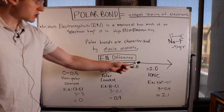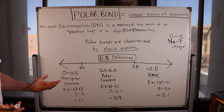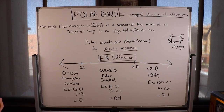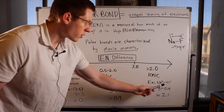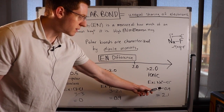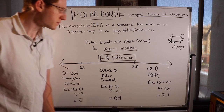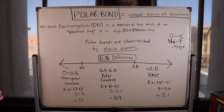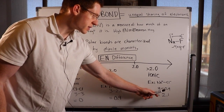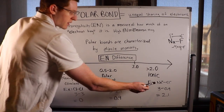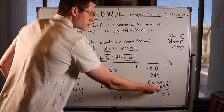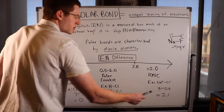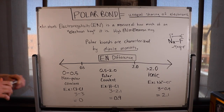The highest level on the polarity scale is an ionic bond, which occurs when the electronegativity difference becomes greater than 2. In NaCl, chloride's electronegativity is 3 and sodium's is 0.9, giving a difference of 2.1. Chlorine is so much more electronegative than sodium that it actually steals one of sodium's electrons — that is the definition of an ionic bond, where one atom steals another atom's electrons to form a bond.